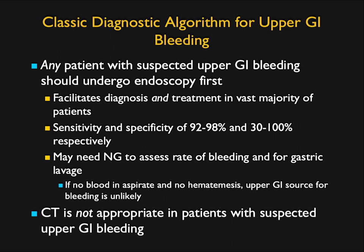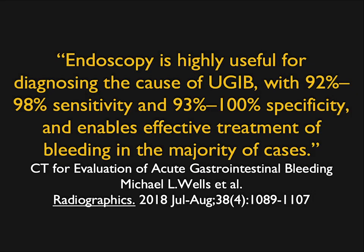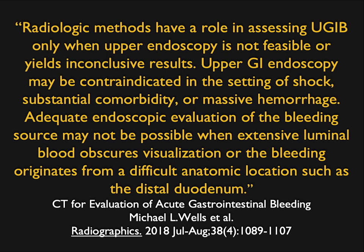In terms of management, any patient with suspected upper GI bleeding typically gets endoscopy, which facilitates diagnosis and treatment in the vast majority of patients with high sensitivity and specificity. You may need an NG tube to assess the rate of bleeding and for gastric lavage. CT is typically not considered appropriate in suspected upper GI bleeding, but that's not always the case — particularly if you're unsure where bleeding is coming from, or if upper GI evaluation is negative or contraindicated. Radiology has a role only when endoscopy is not feasible or results are inconclusive.